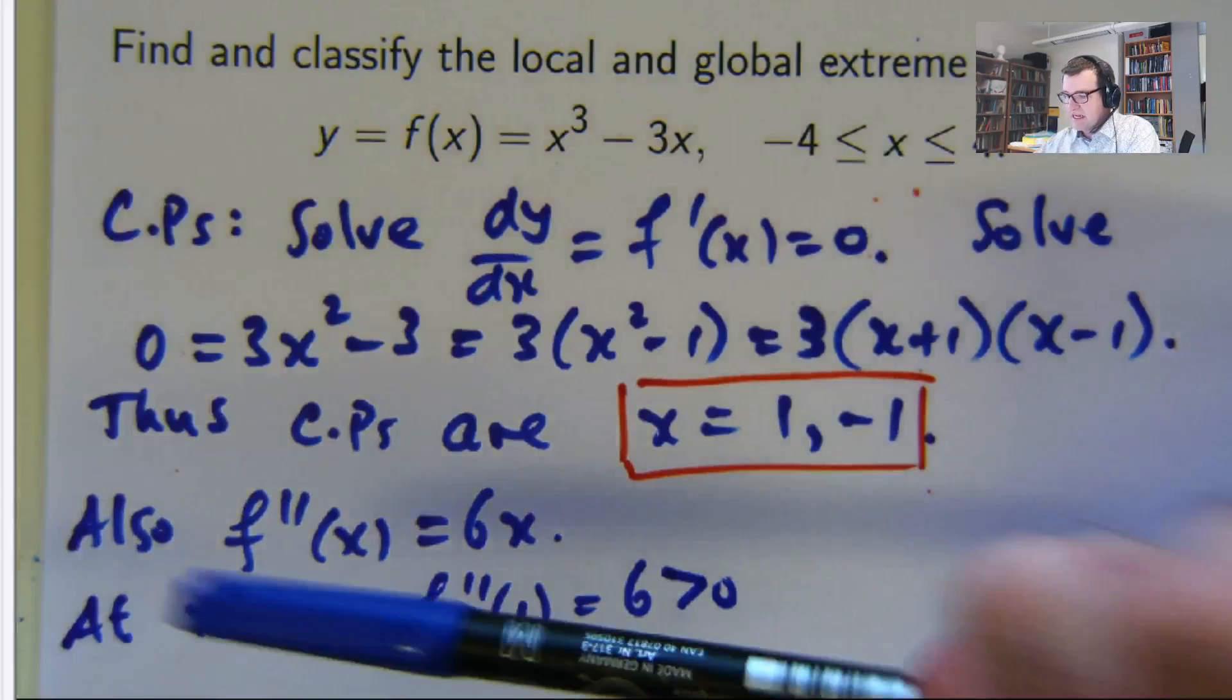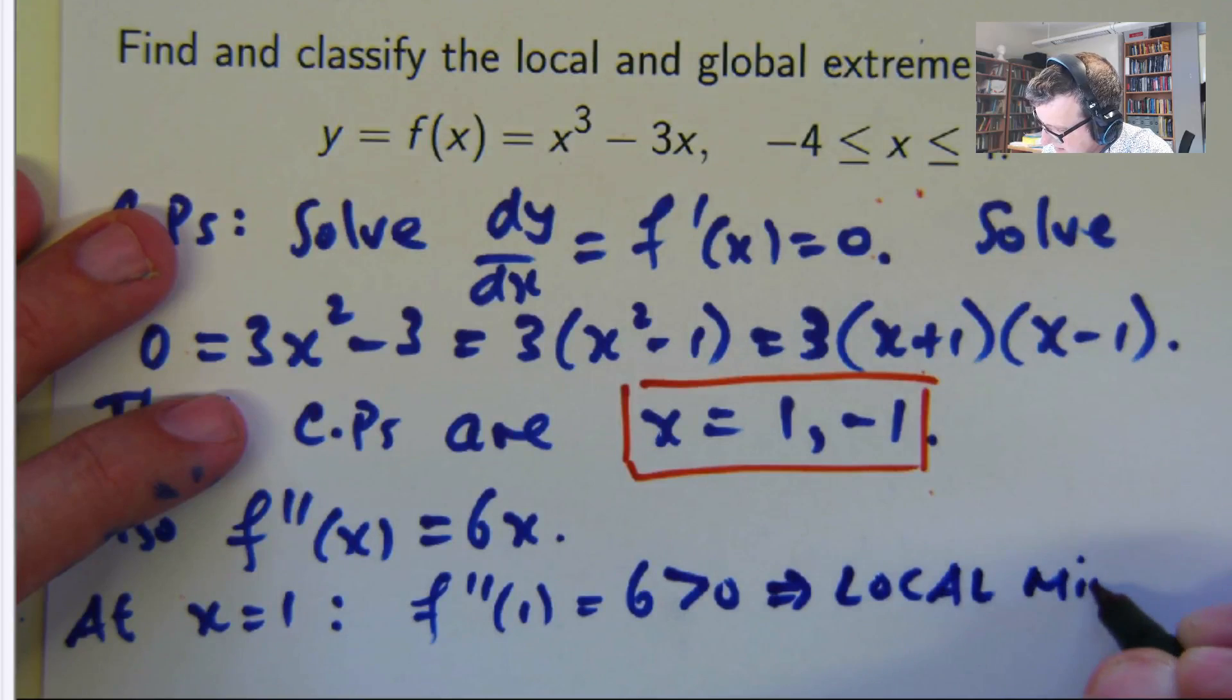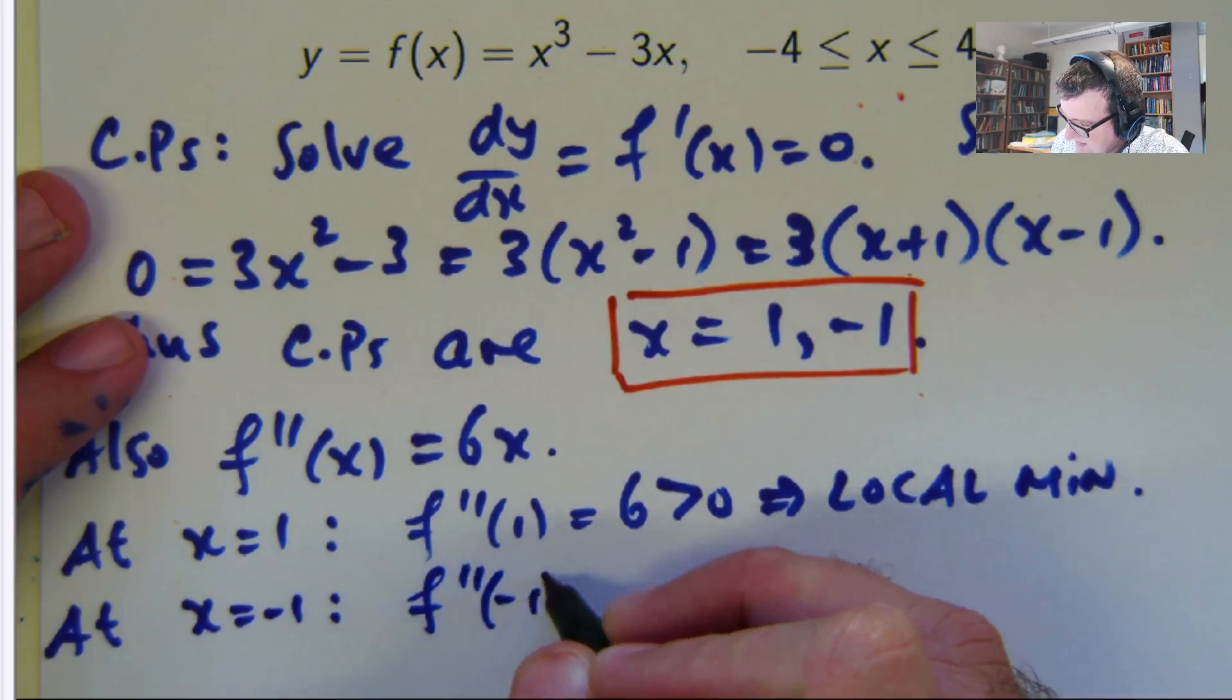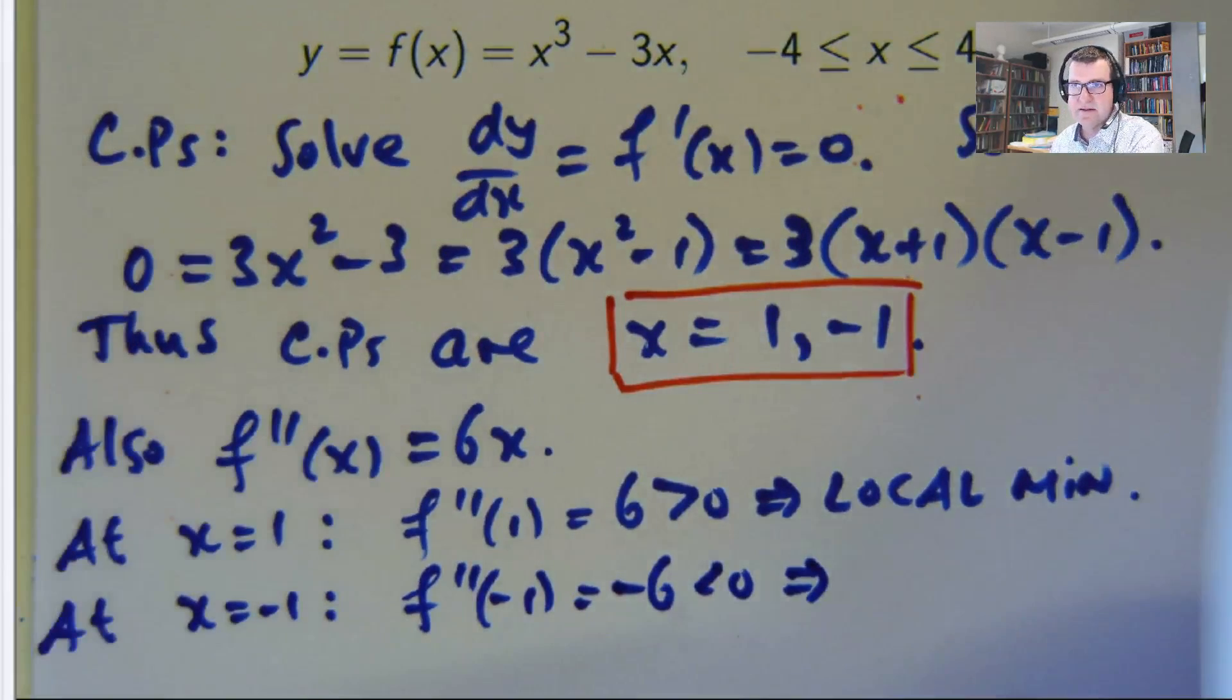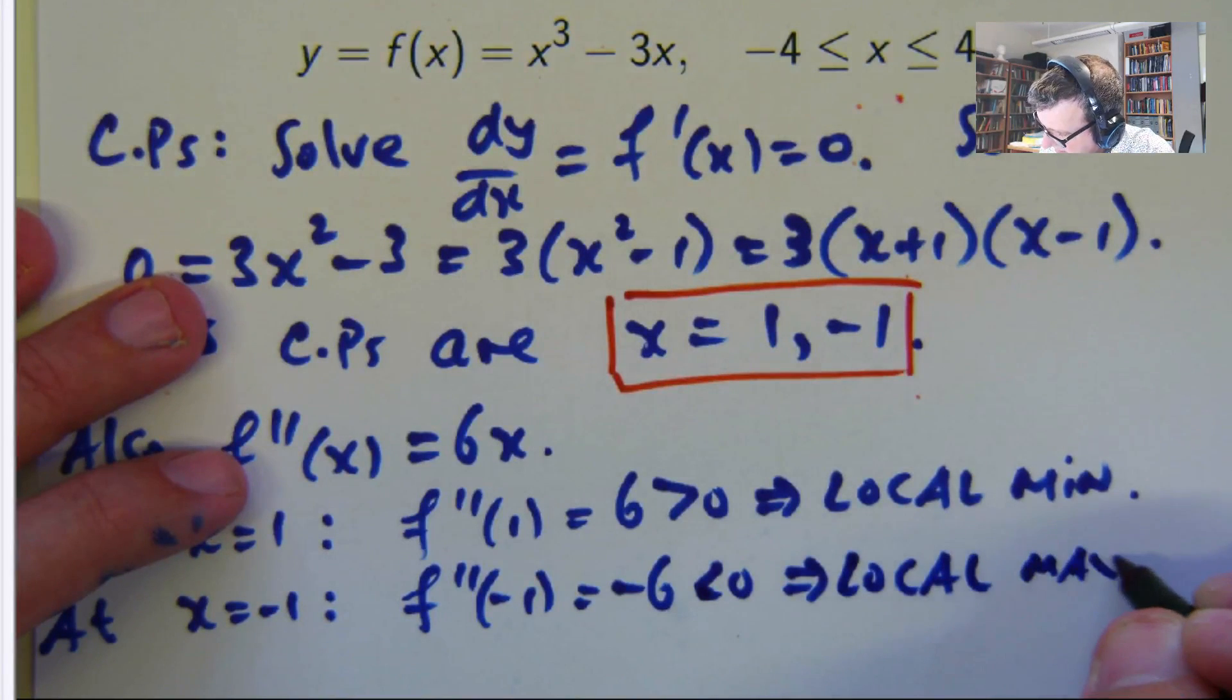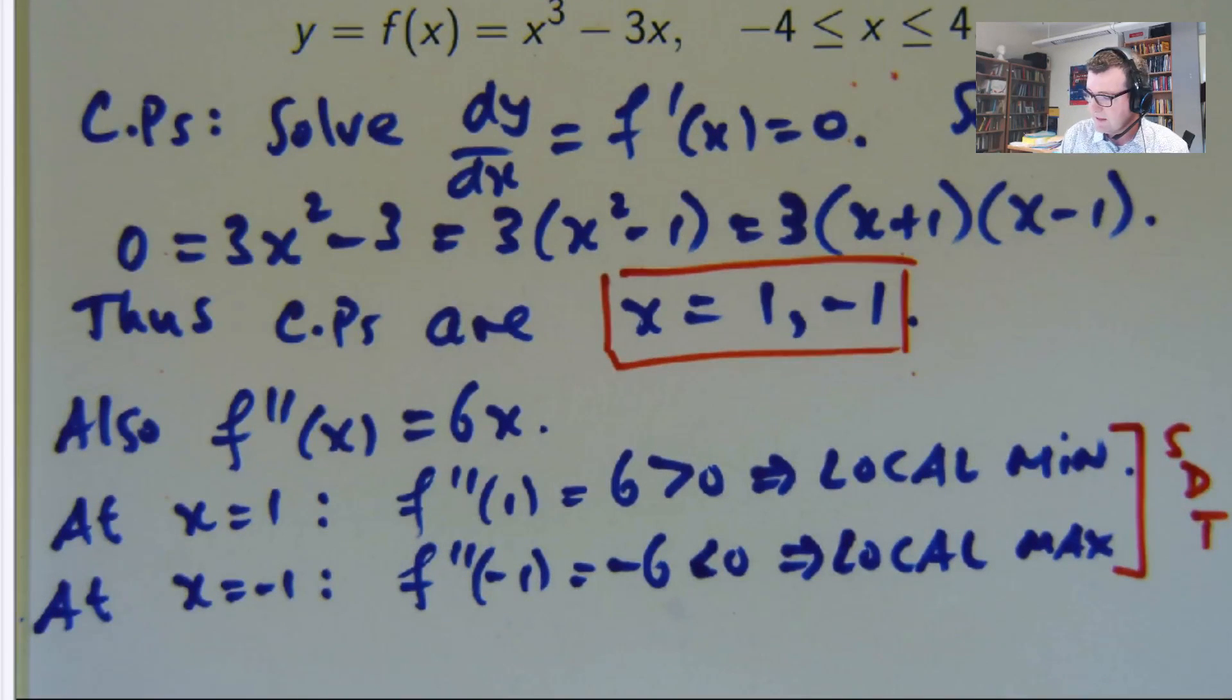So by the second derivative test, if the second derivative is positive, it tells you that f has a local min. Let's try the other critical point. The second derivative in this case is 6x times negative 1. So in that case, if it's negative, the second derivative test says it has a local max. So here we're using the second derivative test.